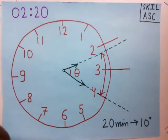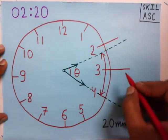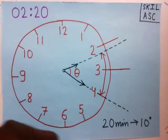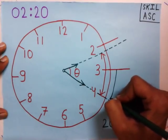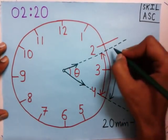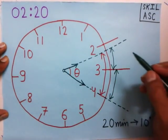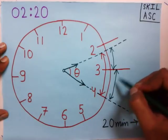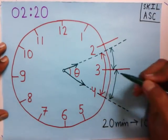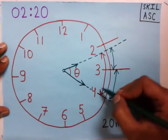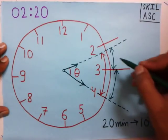If you observe, this angle is made up of two angles — this angle and this angle. If we add these two angles, we will get the total angle theta. So to find theta, we will find these two angles and then add them together.